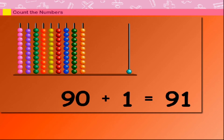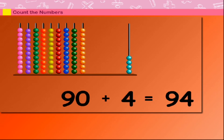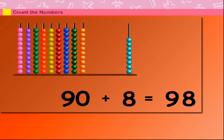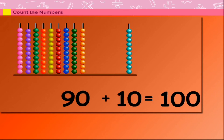90 plus 1 is equal to 91. 90 plus 2 is equal to 92. 90 plus 3 is equal to 93. 90 plus 4 is equal to 94. 90 plus 5 is equal to 95. 90 plus 6 is equal to 96. 90 plus 7 is equal to 97. 90 plus 8 is equal to 98. 90 plus 9 is equal to 99.